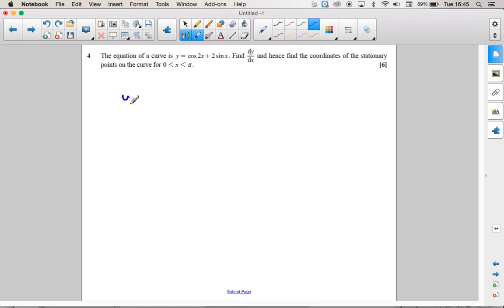Paul wants us to differentiate y equals cos 2x plus 2 sin x and go on to find the stationary point. So let's differentiate it first.